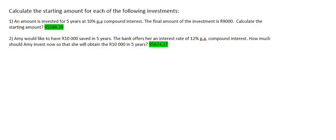Alright, let's start with number 1. An amount is invested for 5 years at 10% per annum compound interest. The final amount is 9,000. Calculate the starting amount.